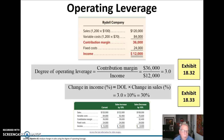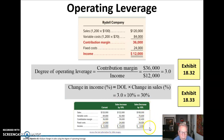The same thing would be true if we decrease sales by 10% — that means this $12,000 would go down by 30%, giving us $8,400 in income.